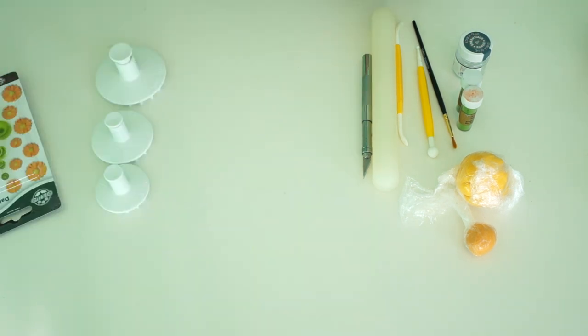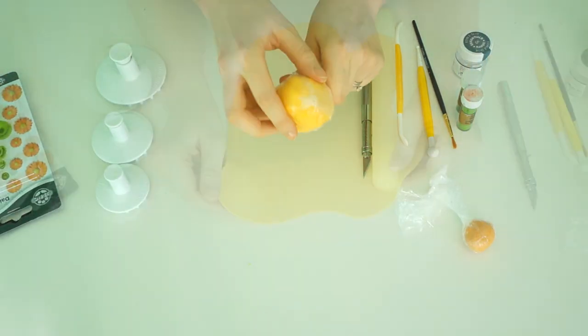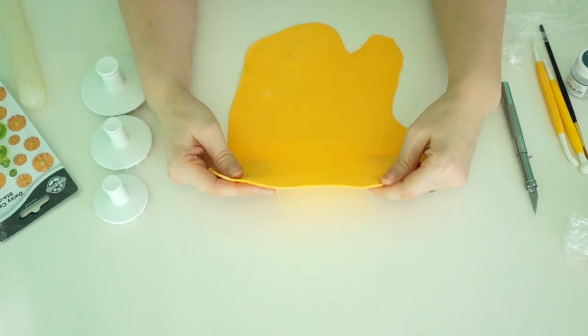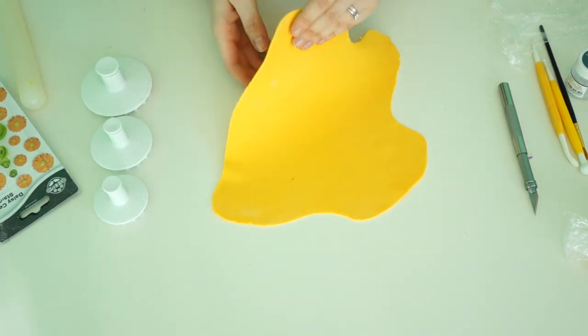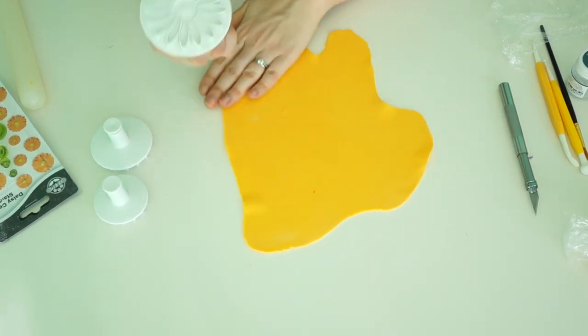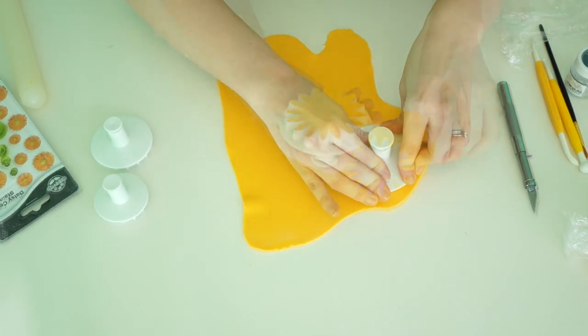So what we want to do first is just roll out the yellow. Because I'm not actually going to put wires in these flowers, I've rolled it out so it's about a millimeter thin, and then I'm going to take the petal cutter and you want three pieces.